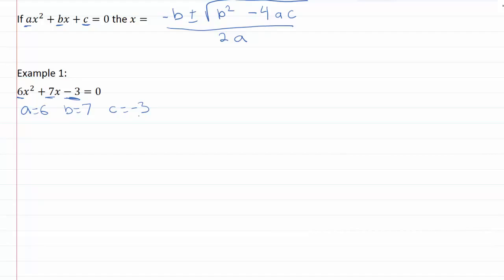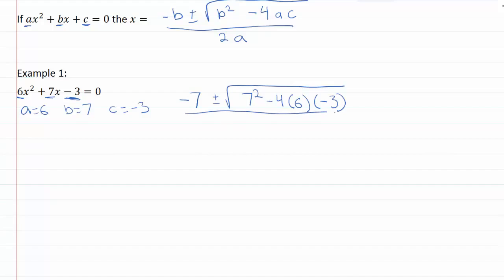Now we want to plug each of these into our formula. We're going to have negative b — negative 7 — plus or minus the square root of 7 squared minus 4 times a, which is 6, times c, which is negative 3. Watch your negative signs — be really careful with your negatives. All over 2 times a, and a is 6. Then we simplify: negative 7 plus or minus the square root of 7² = 49.